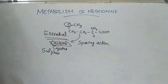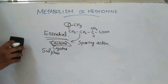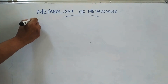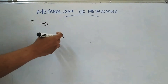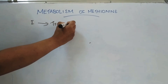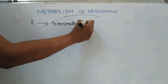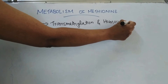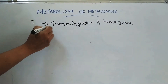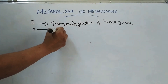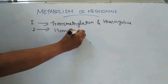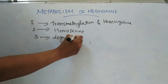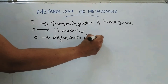Coming to the metabolism of methionine, it involves three stages. Stage 1 is transmethylation and conversion to homocysteine. Stage 2 is conversion of homocysteine to homoserine. Stage 3 is degradation of homoserine.